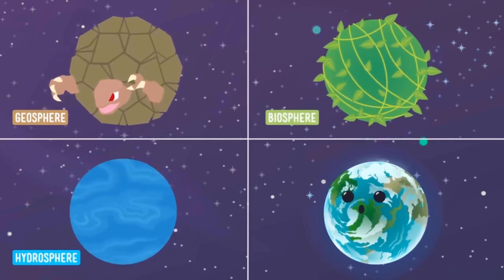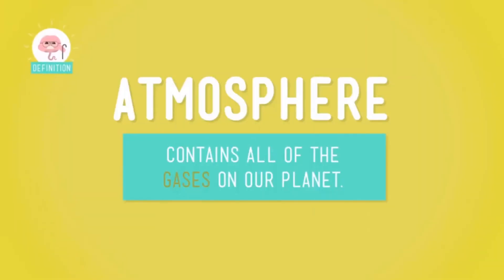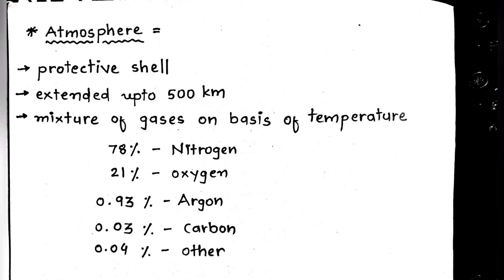Let's start with atmosphere. Atmosphere is the protective shell of gases over the Earth. It is extended up to 500 kilometers from the Earth's surface.